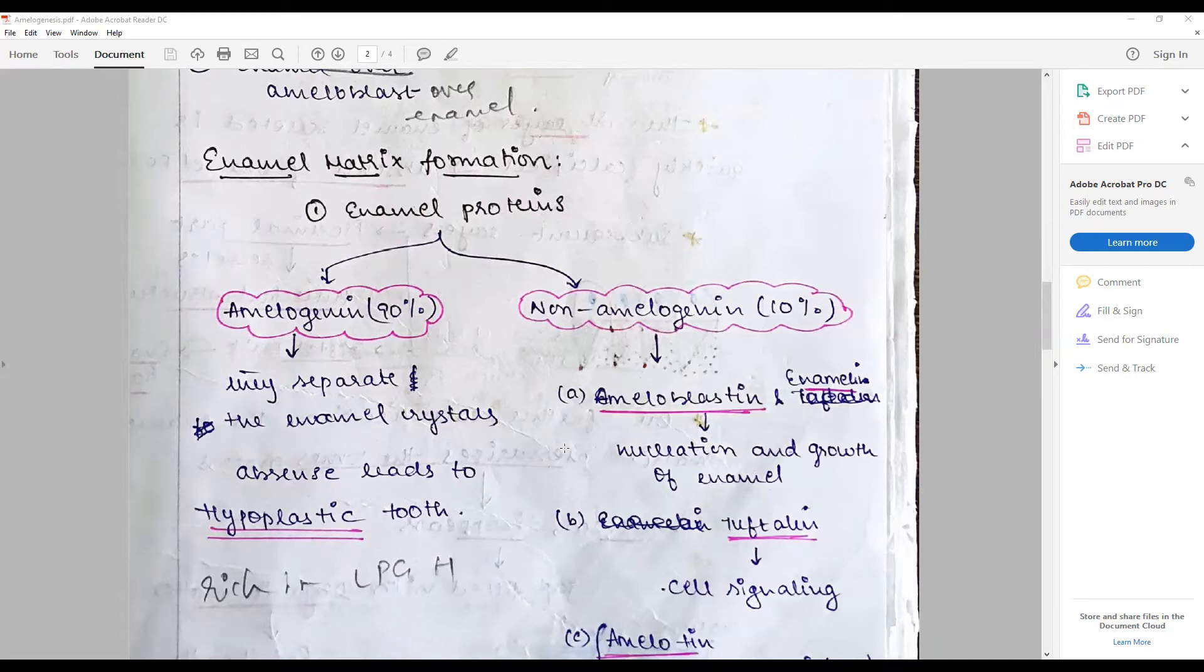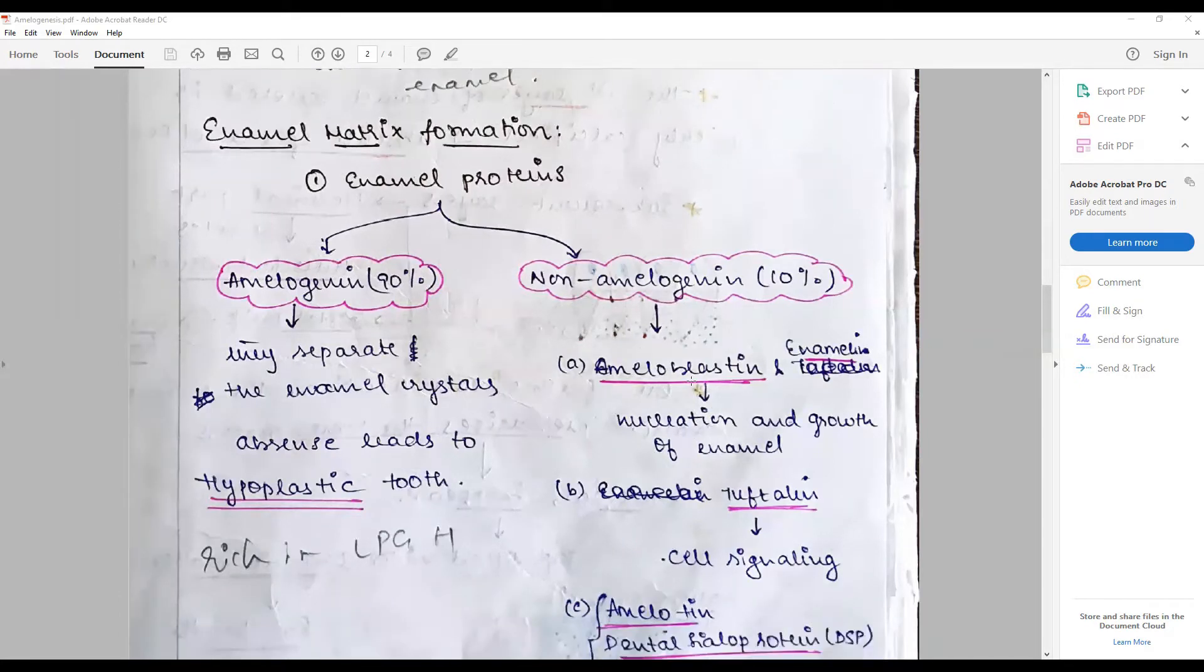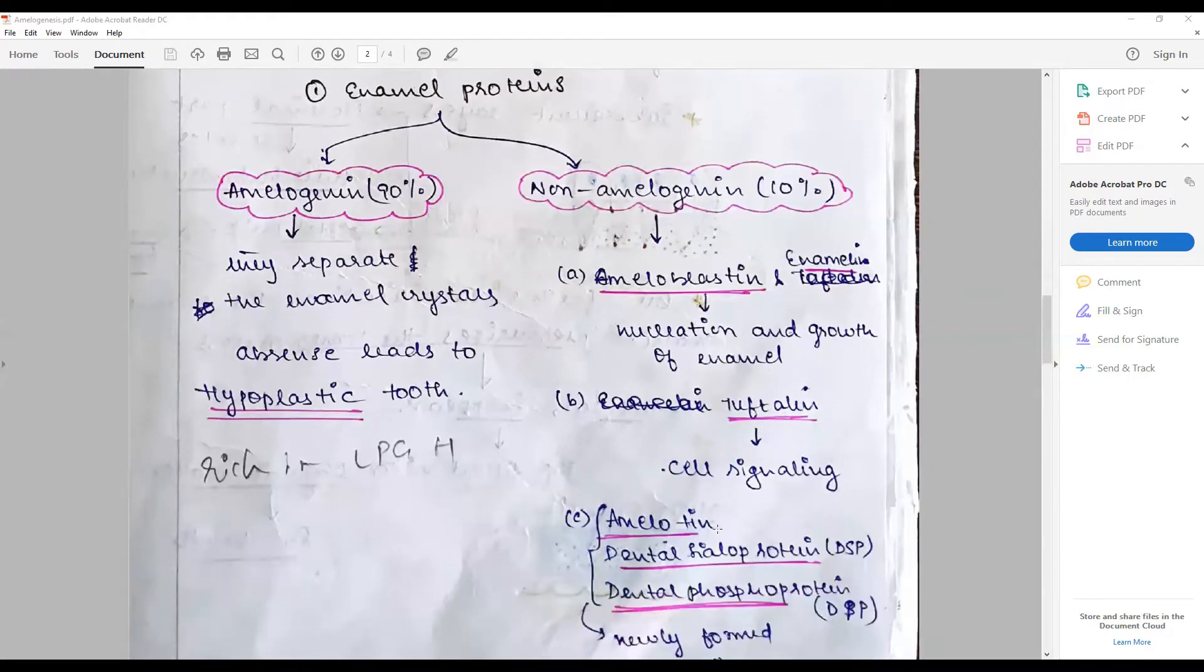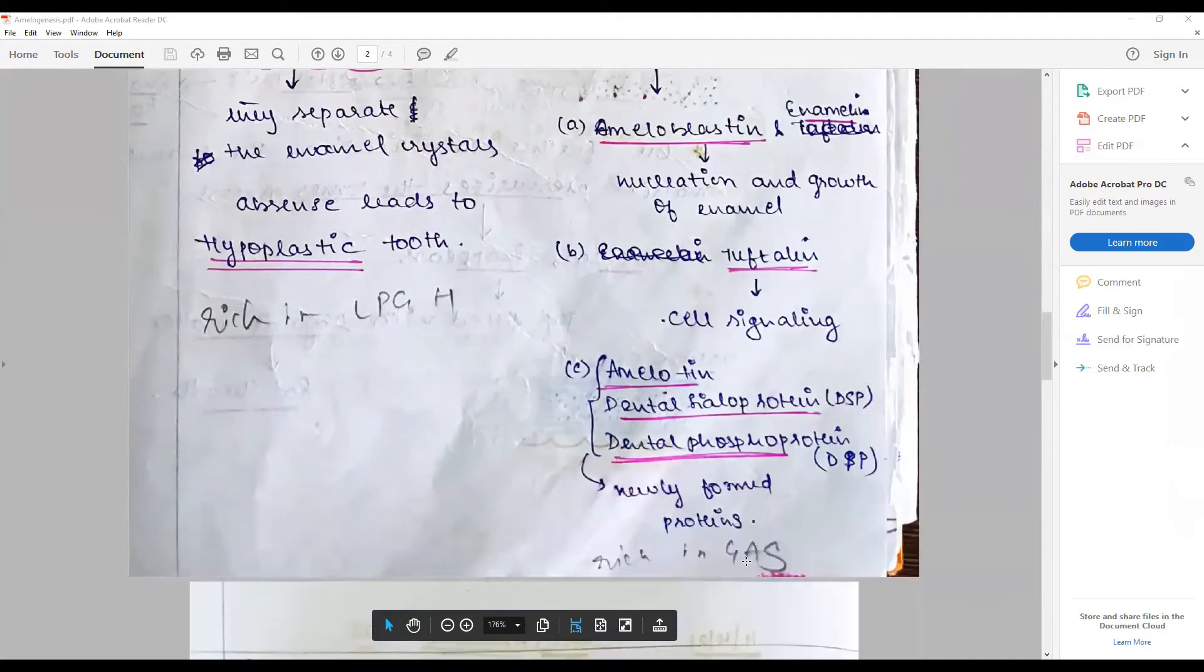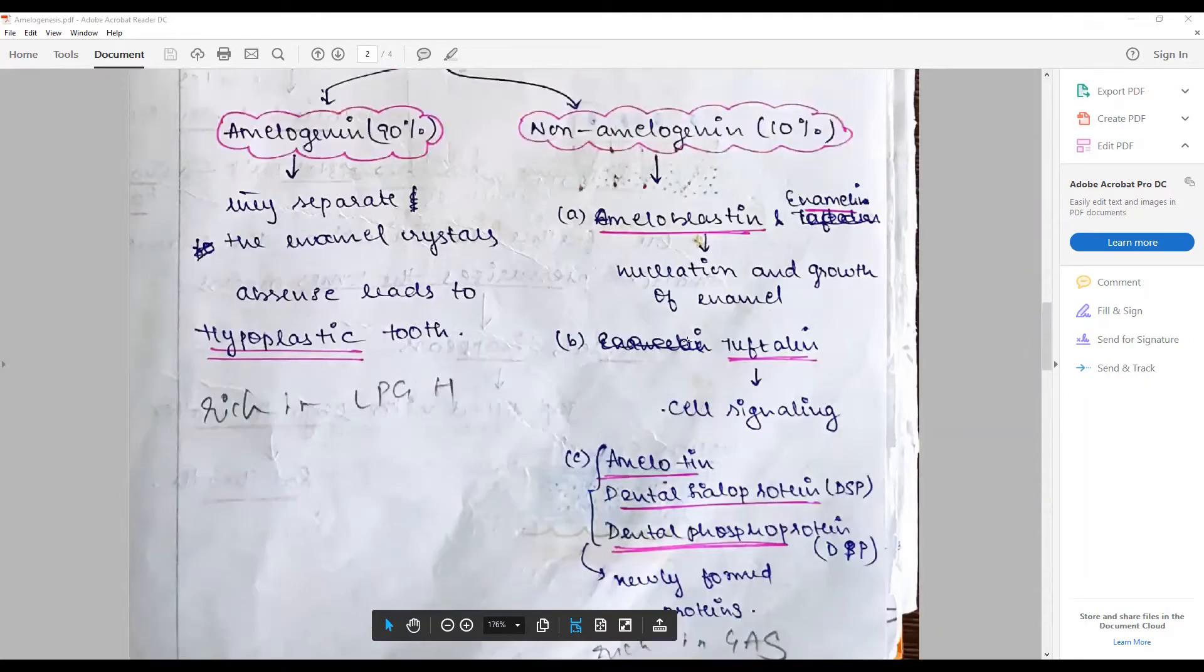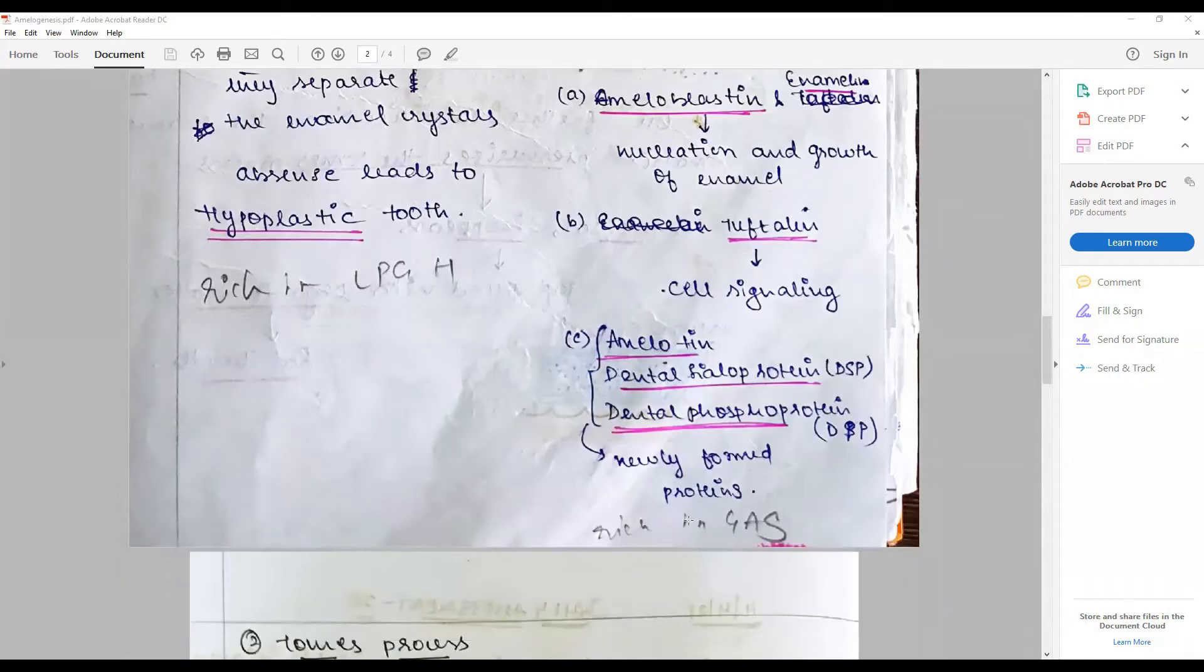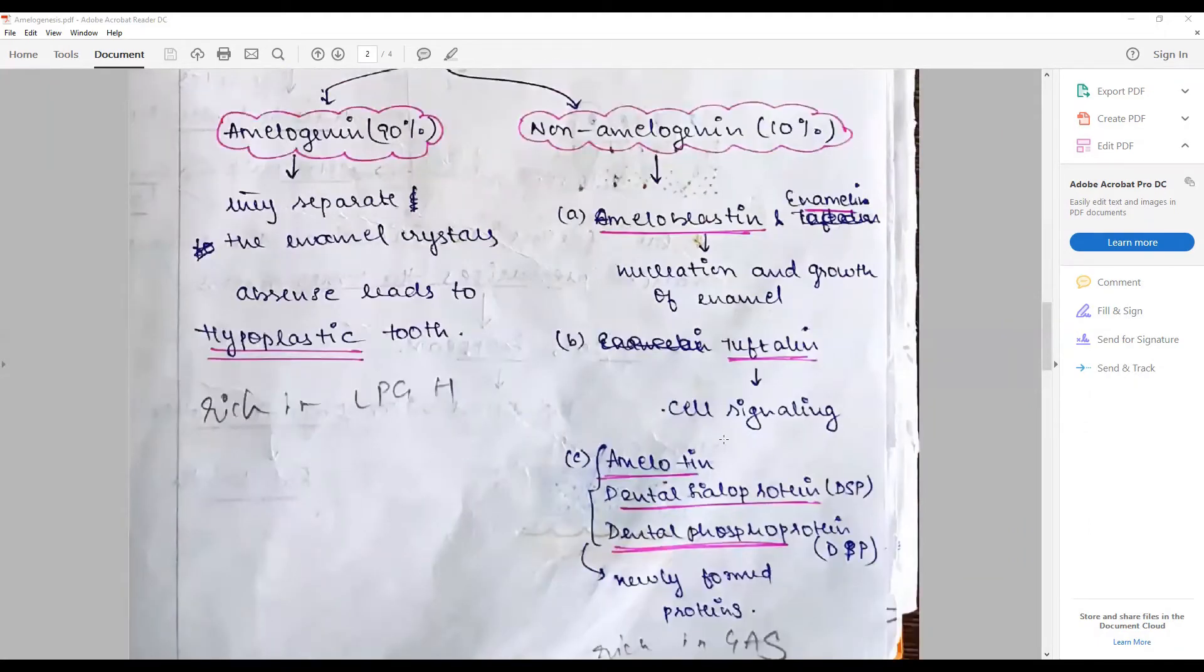Ameloblastin and enamelin are for matrix maturation. Tuftelin is responsible for cell signaling. Other proteins include ameloprotein, dental sialophosphoprotein, and newly formed proteins. These entire non-amelogenins are associated with being rich in glycosaminoglycans and concerned only with nucleation and growth of enamel, whereas amelogenins are responsible for enamel crystal formation and growth.